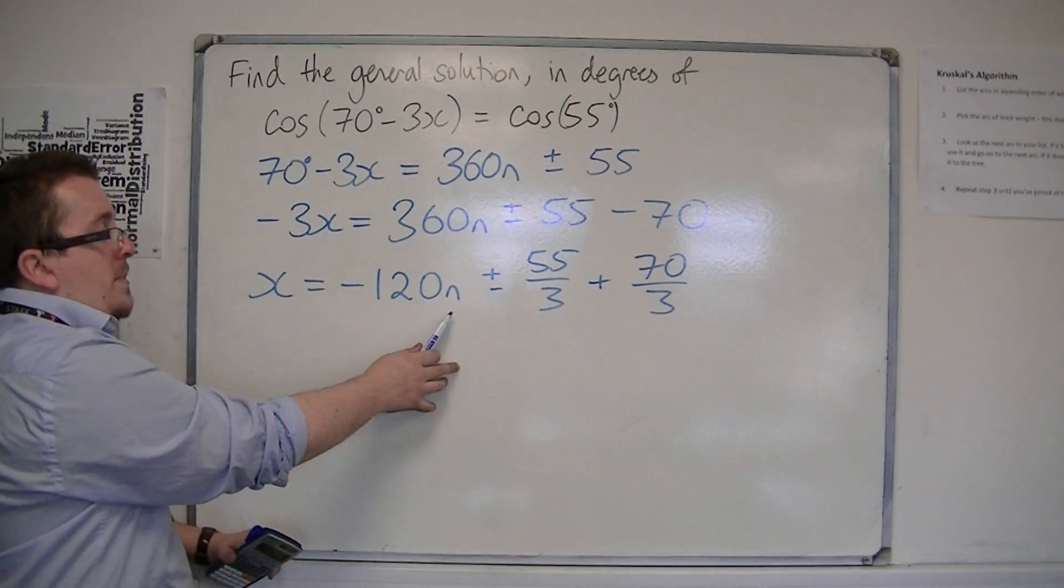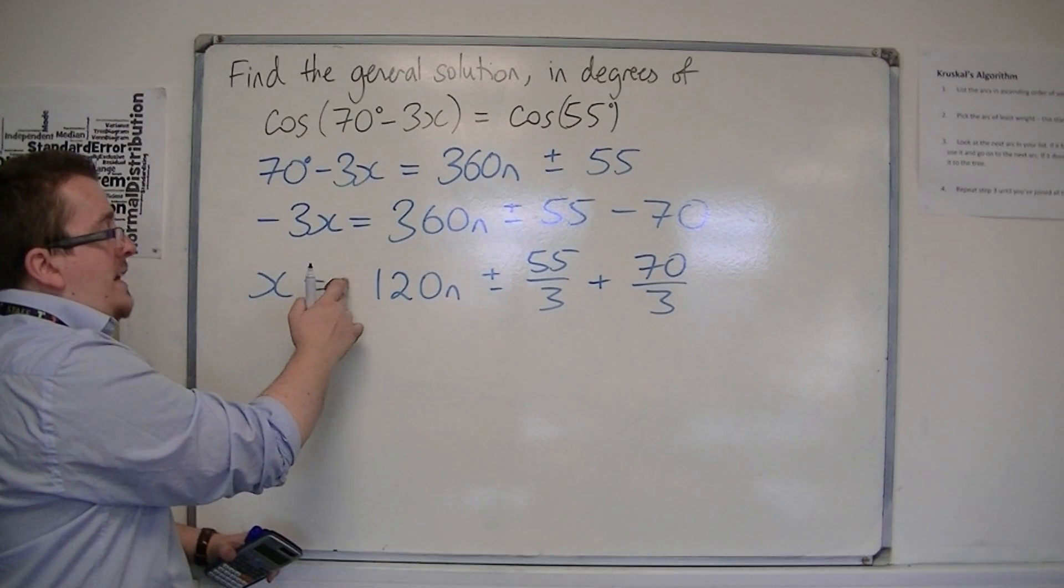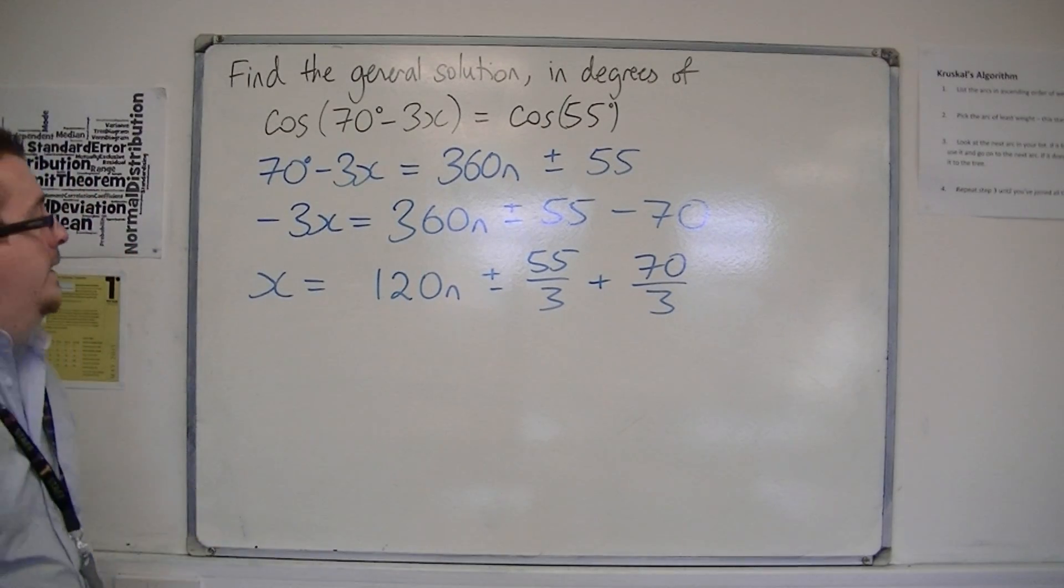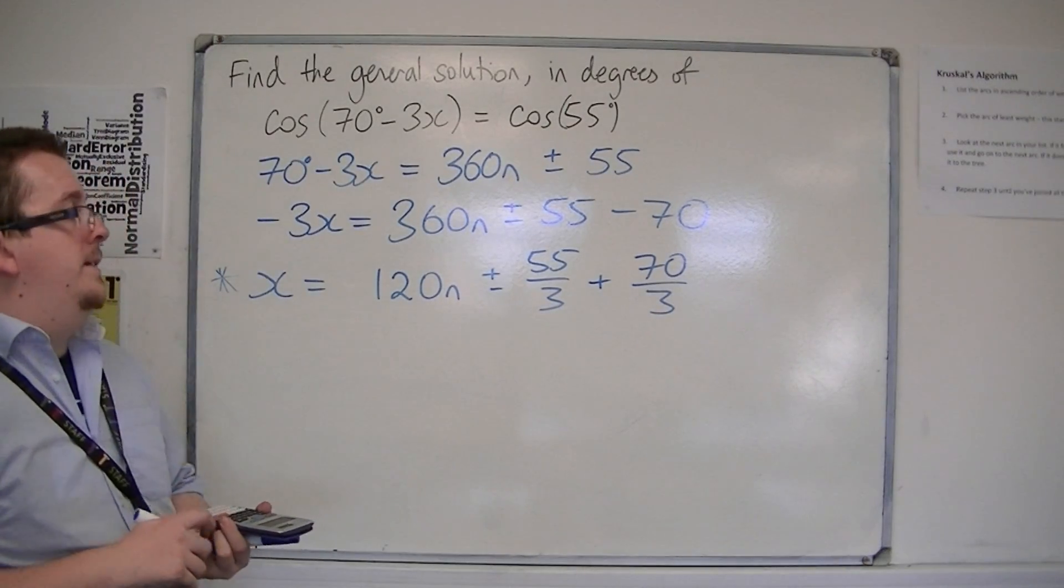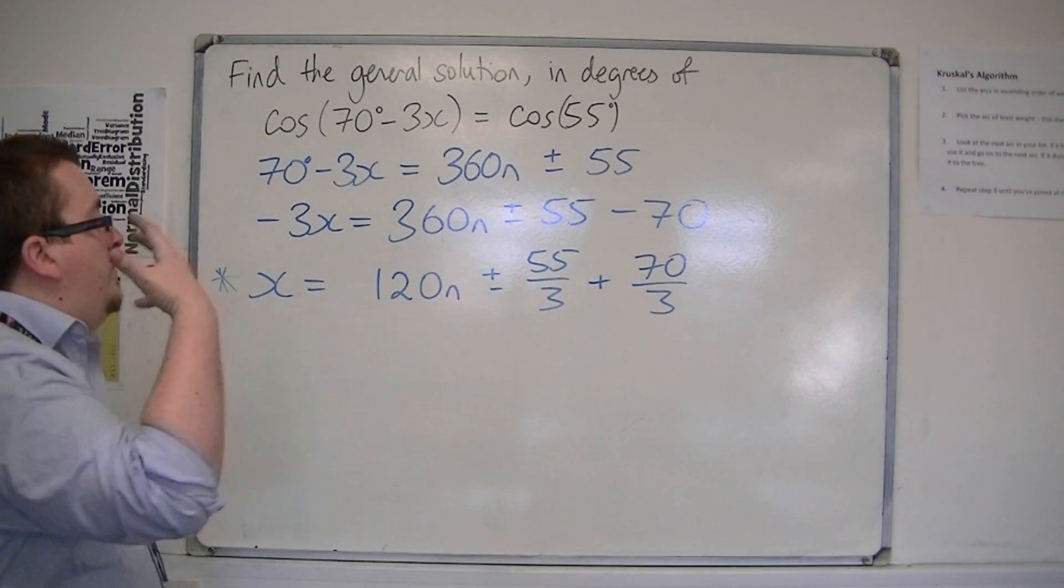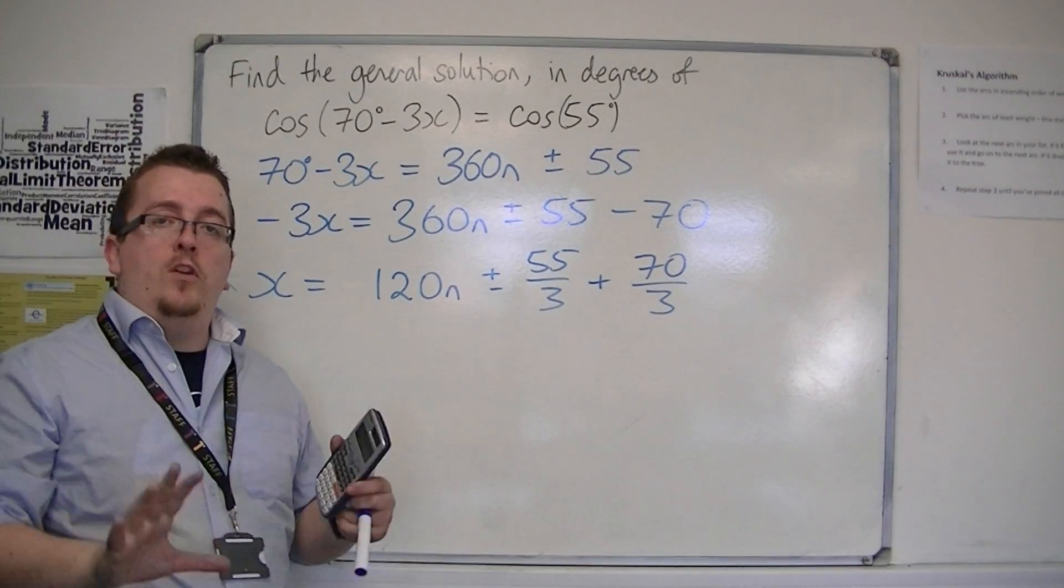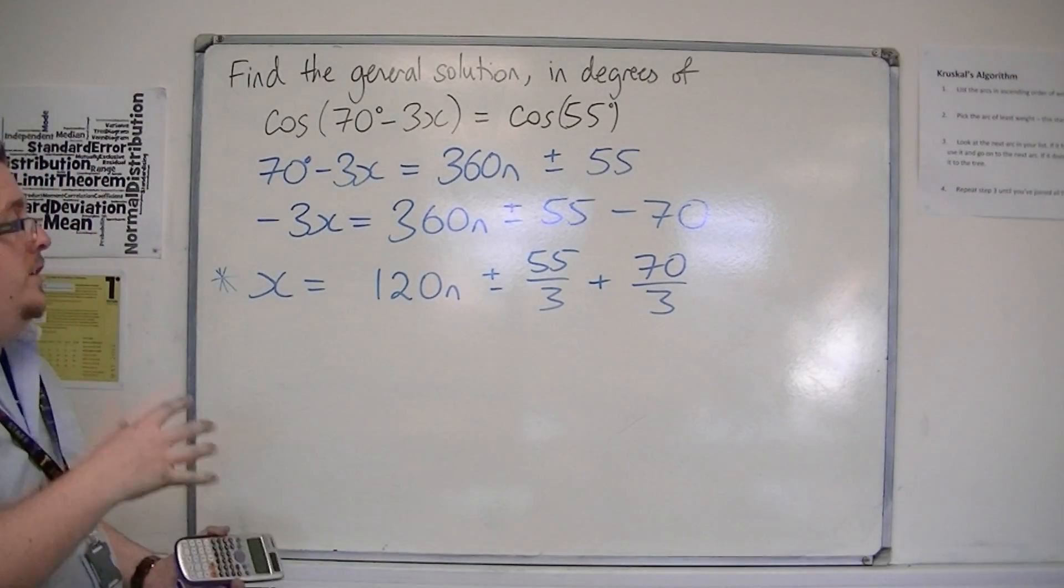Now, because n can be positive or negative, I don't really need that negative sign there. And that is my general solution for the original equation. If you want to leave the minus sign there, by all means do, but you don't need to.